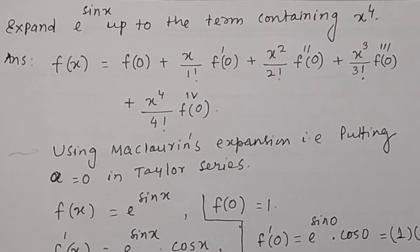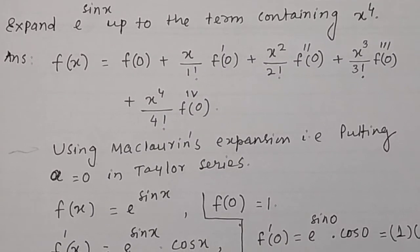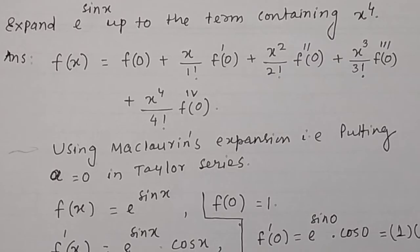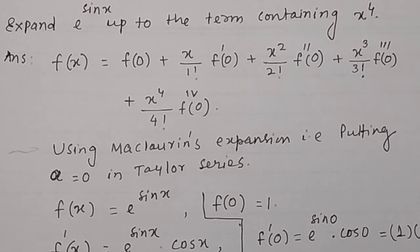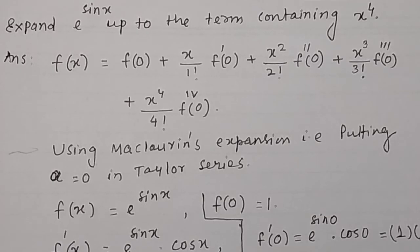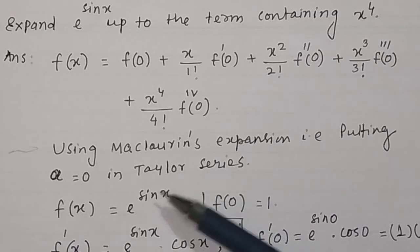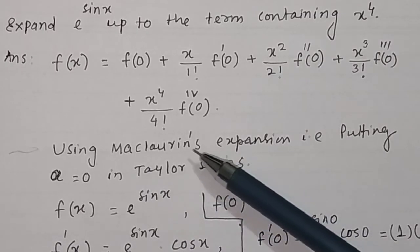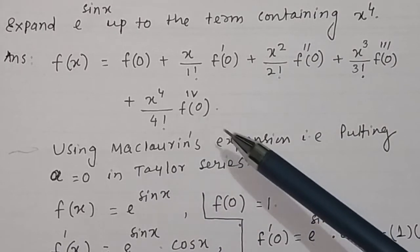Expand e to the power sin x up to the term containing x to the power 4. Here we apply Maclaurin's expansion, that is putting a equal to 0 in Taylor series, we get Maclaurin series.